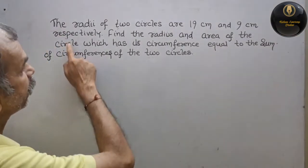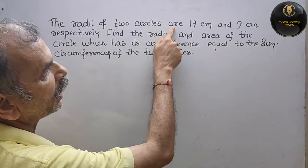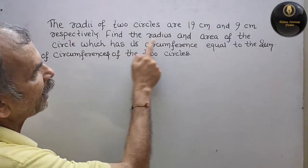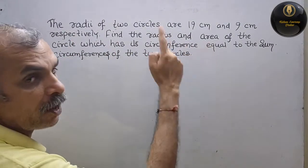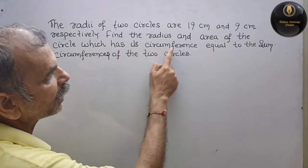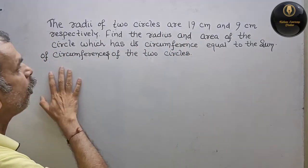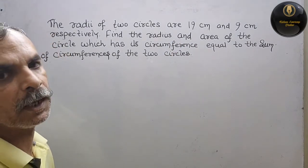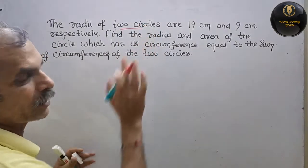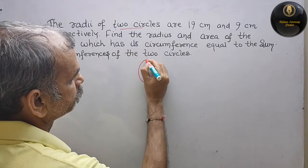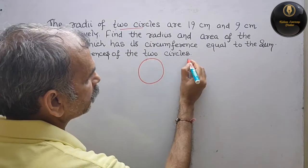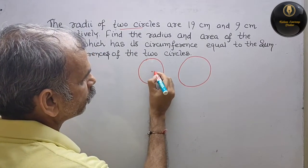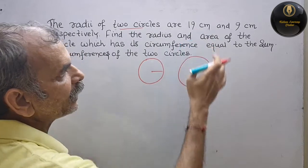Apta question hai: the radii of the two circles are 19 cm and 9 cm respectively. Find the radius and area of the circle which has its circumference equal to the sum of circumferences of the two circles. This is circle 1 and this is circle 2, so radii are 19 and 9.